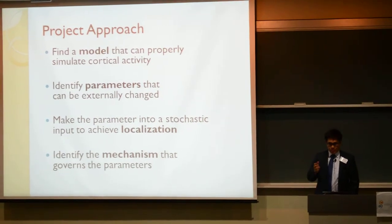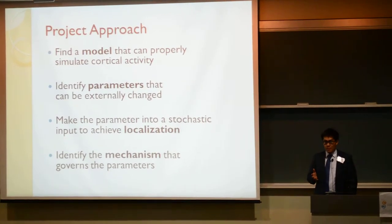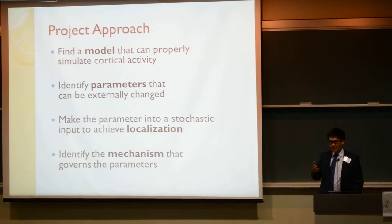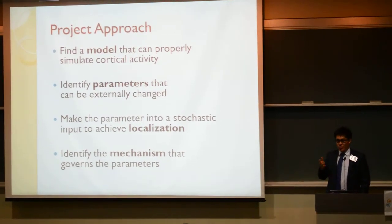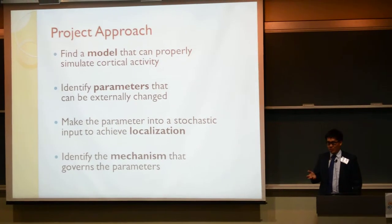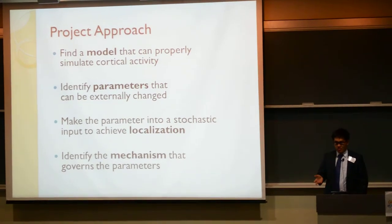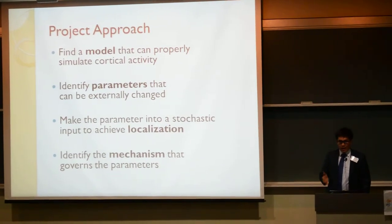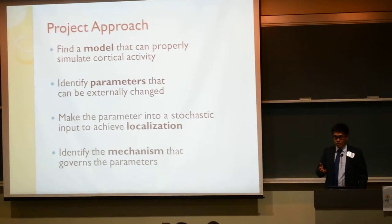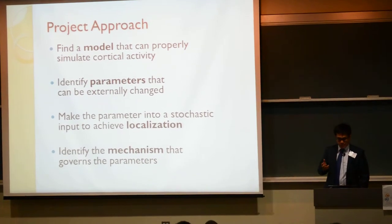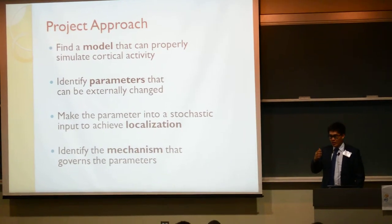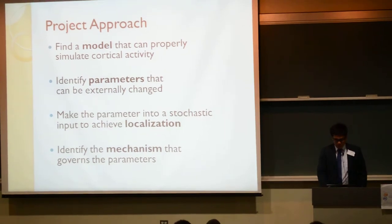The approach to this comes in four parts. First, we want to find a model that can emulate brain activity, because even if we hypothesize a procedure, I don't want to invite people into my lab and give them seizures. A better idea would be to simulate procedures on my computer. Once we have the model, we want to identify parameters that can be externally changed to achieve localization, which is basically applying random signals to the brain, and find the mechanism that governs the parameters based on what kind of external signals we give to the brain.